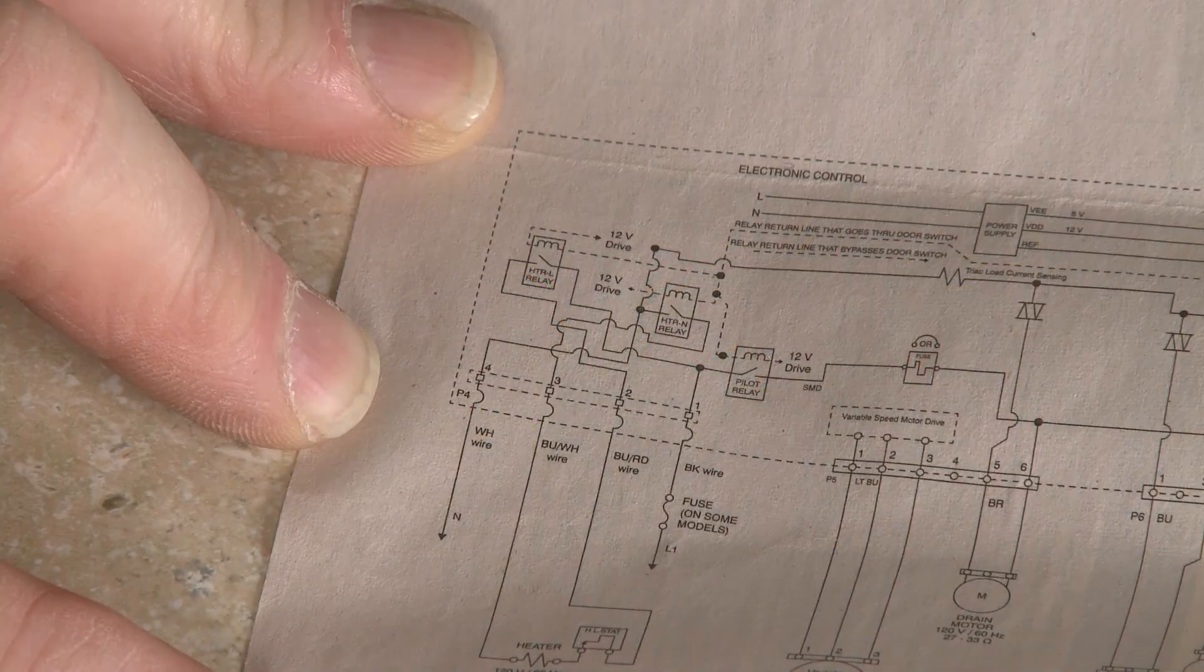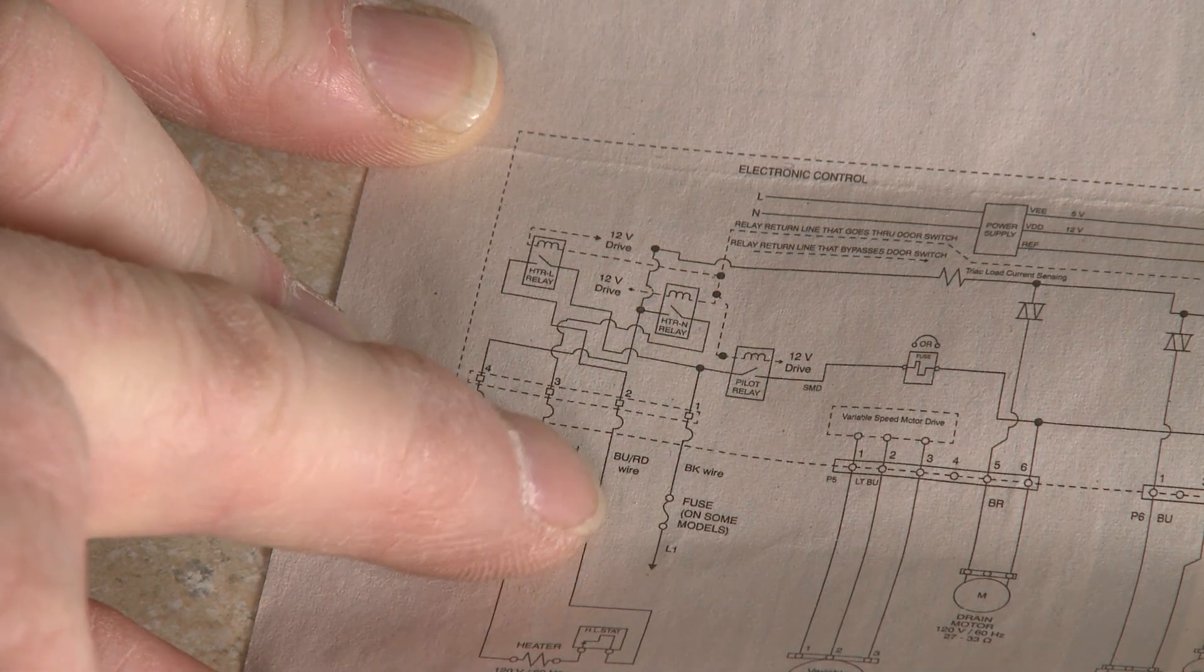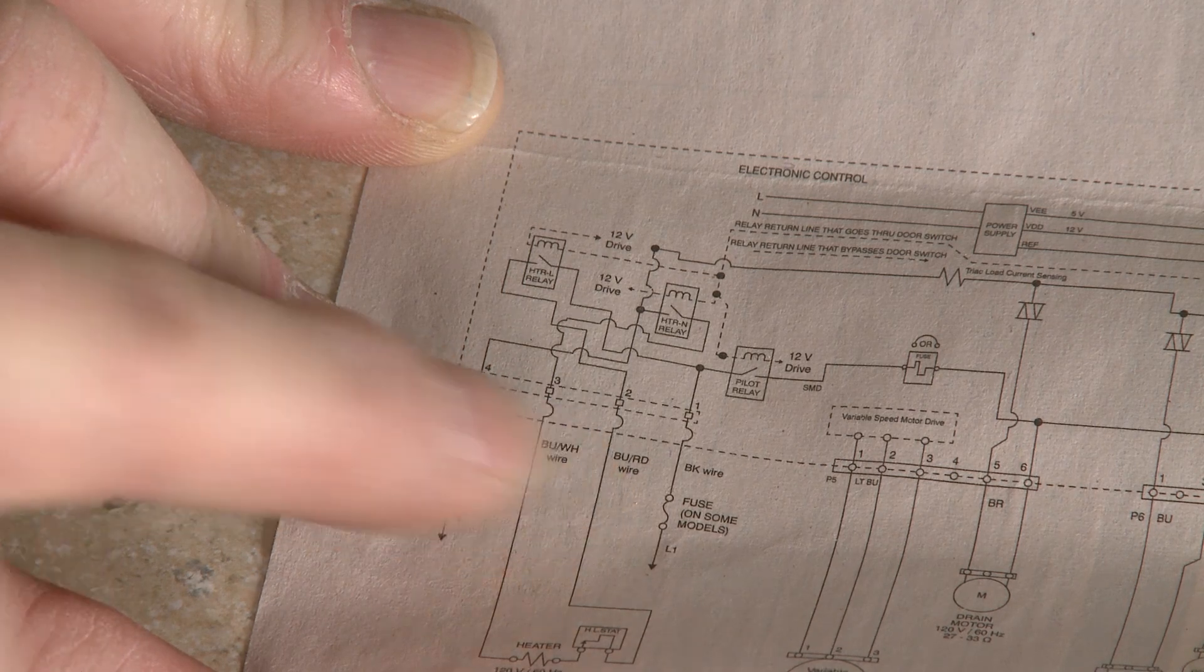Using the appliance's wiring diagram, identify the terminals or pins on the control board that supply power to the flow-through heater. Set the multimeter to volts AC and restore power to the dishwasher.